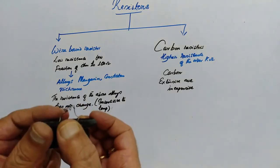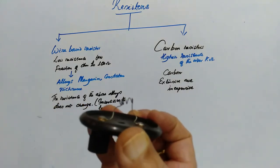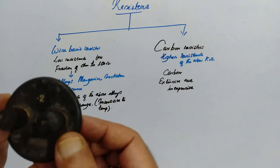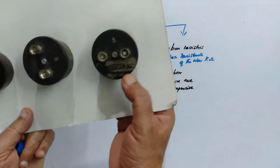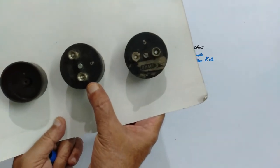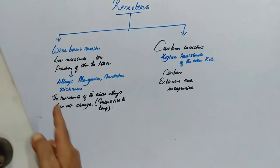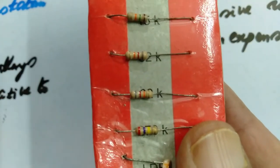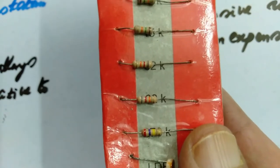This is the reason why standard resistors are made from manganin, constantin, and nichrome. Carbon resistors are used widely. These here are wire-wound resistors — the value of this one is 2 ohms, this is a 5 ohm resistor, and this is also another 5 ohm resistor.